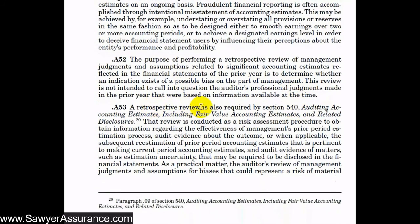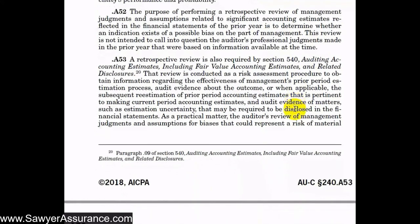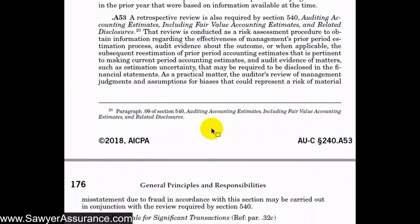That retrospective review is also required in AUC Section 540 as a risk assessment procedure, where the goal is to see if management was effective in the prior year at estimating the balance in question. This helps us assess for the current year how accurate the estimate might be if management is using the same estimation process as in the prior year.